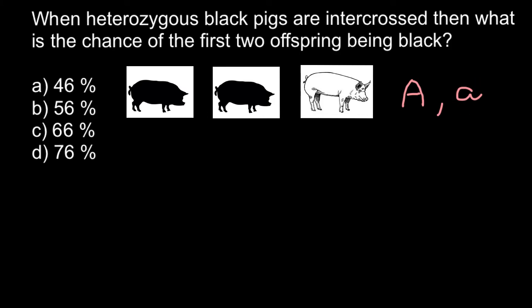With these two alleles we can get three genotypes. The first genotype is capital A capital A — this gives a black pig. The second is capital A and small a — this is still a pig with black pigment, because one allele produces black pigment even though the second cannot. The third variant is small a small a, where both alleles are mutated and cannot produce black pigment, so we would see a pig that is white.